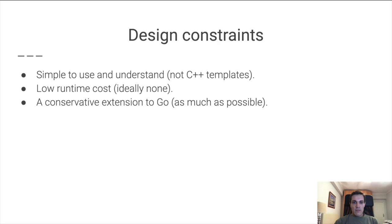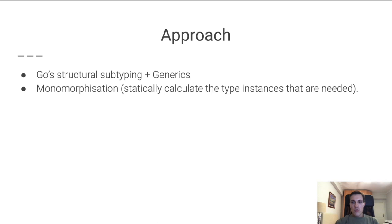Our approach, based on this, was to think of Go structural typing and subtyping with generics, which would allow type constraints with no extra language features, and also to consider a compilation strategy based on monomorphization.